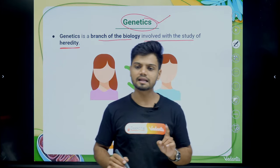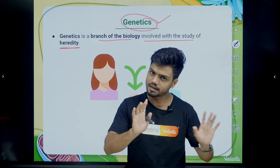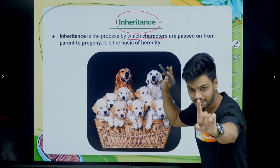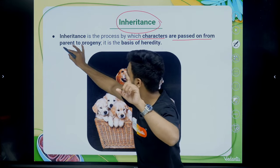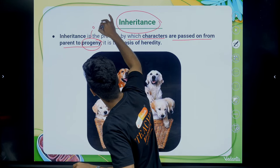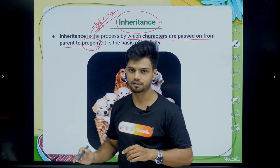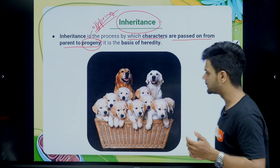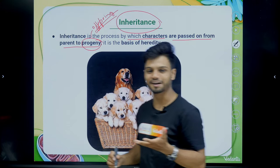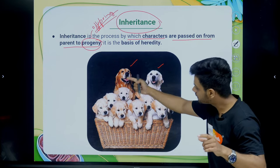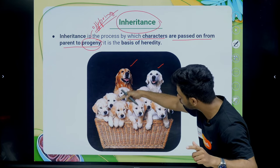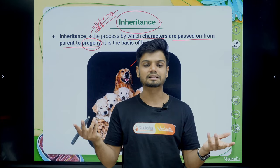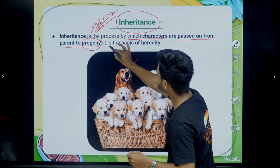Heredity is the transmission of characters from parent to offspring. Inheritance is a process by which characters are passed from parent to the progeny — also called offspring. So we are transferring certain characters from parent to offspring; that is called heredity. For example, in a golden retriever, the fur color is transferred from the parent to the offspring. That is inheritance — the basis of heredity.